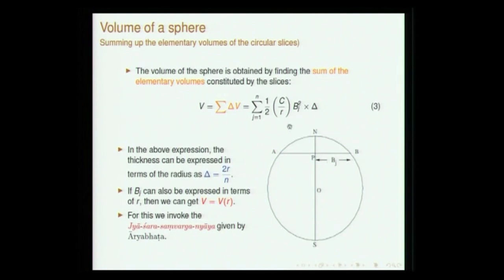Looking at the right-hand side of this expression, we have (C/r)·δ where δ = 2r/n is the thickness. We need to find an expression for B_j², and if B_j is also expressed in terms of r, we will get an expression for volume in terms of r. For this, we invoke the Jya Shara Samvarga Nyaya, which will be discussed from Aryabhatiya — basically we need to get an expression for B_j.